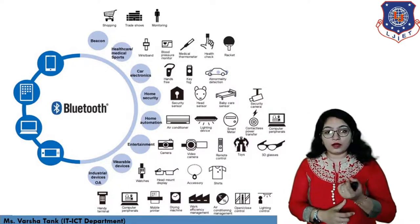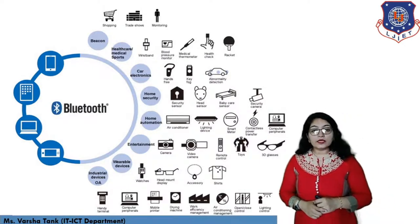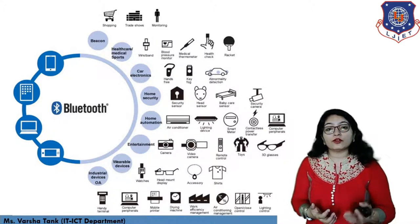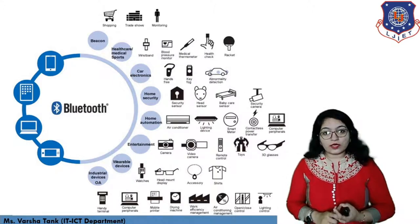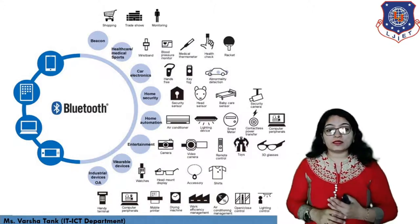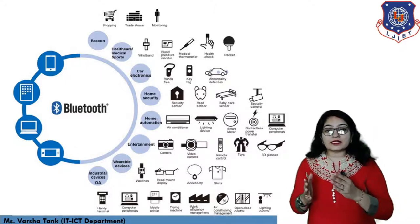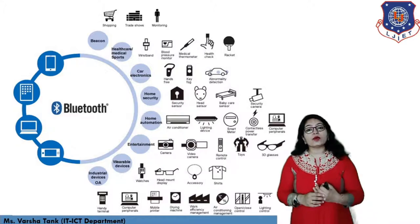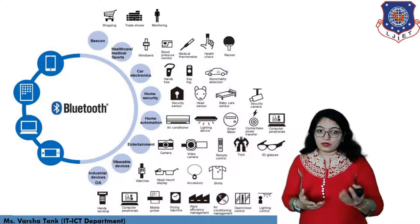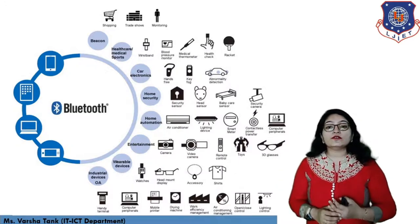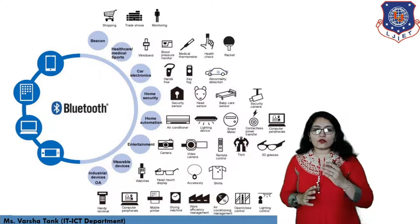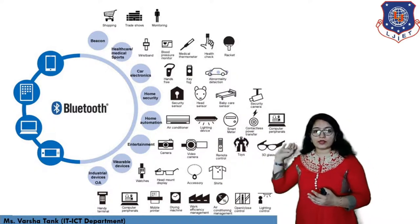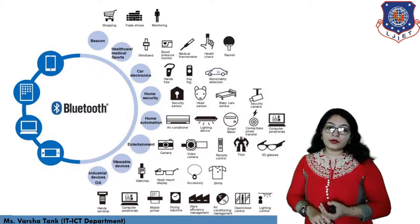You can also use a Bluetooth wristband. Whatever messages you are receiving on your phone, you are able to see them on your watch as well. This is all because of synchronization — the Bluetooth device is synchronized with your phone. So whatever data you receive, whether it is a call or a message, you receive it on your wristband too.